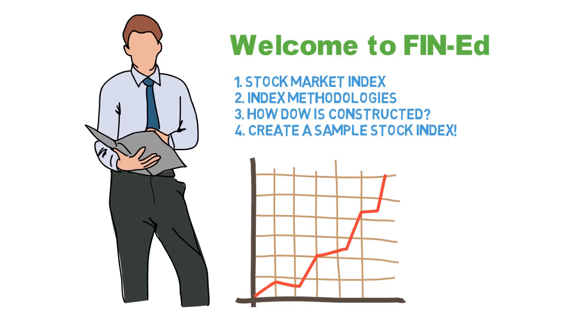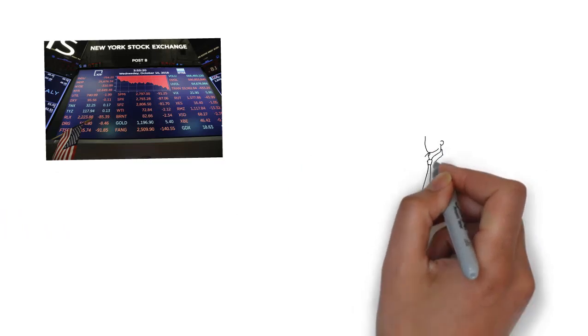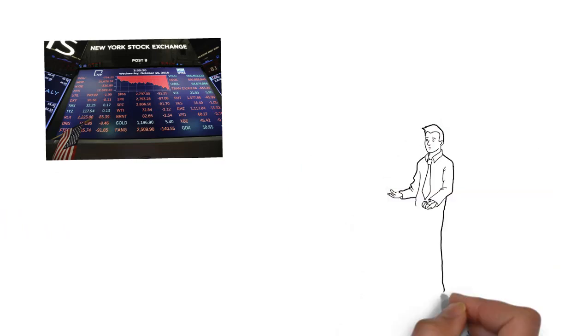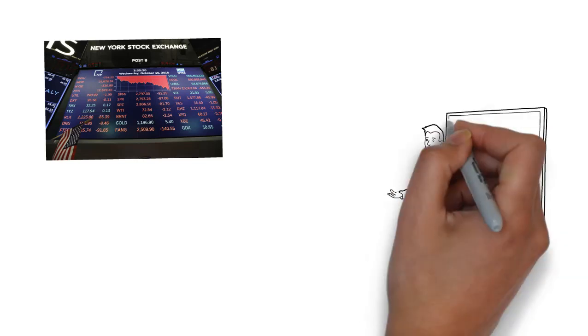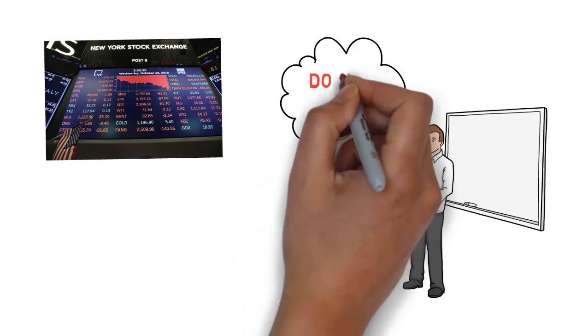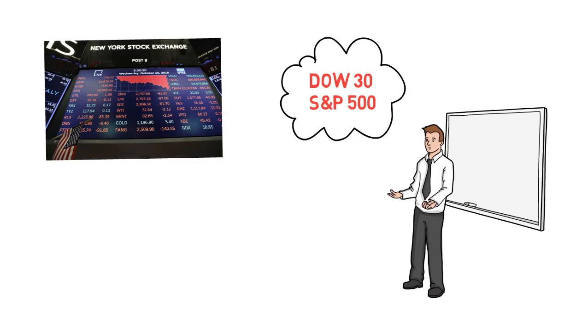A stock market index is a measurement of a section of the stock market that is supposed to represent the entire stock market. It is computed from the prices of selected stocks. It is a tool used by investors and financial managers to describe the market and to compare the return on specific investments. For example, Dow uses 30 companies, S&P index uses 500 companies, and so on.